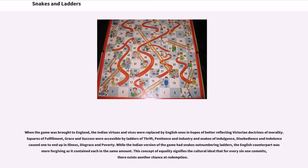When the game was brought to England, the Indian virtues and vices were replaced by English ones in hopes of better reflecting Victorian doctrines of morality. Squares of fulfillment, grace, and success were accessible by ladders of thrift, penitence, and industry, and snakes of indulgence, disobedience, and indolence caused one to end up in illness, disgrace, and poverty.